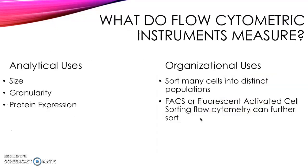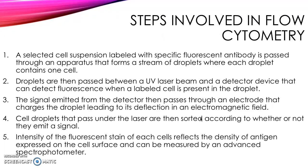Flow cytometric instruments have two main uses. The first includes analytical uses, where it can analyze the size, granularity, and intracellular and cell surface protein expression of different immunological cells. It also has organizational uses, where it can sort many different cells into distinct populations. FACS, or fluorescent activated cell sorting, can further sort those into even further subset populations.